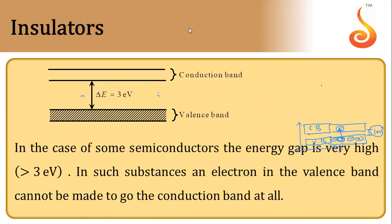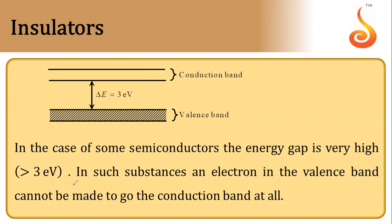Next is insulators. In an insulator, the energy difference or energy gap between the conduction band and valence band is very large — around three to four electron volts, greater than three electron volts.